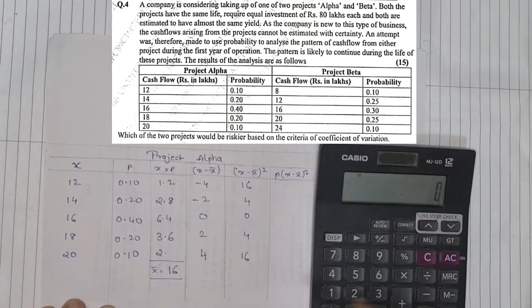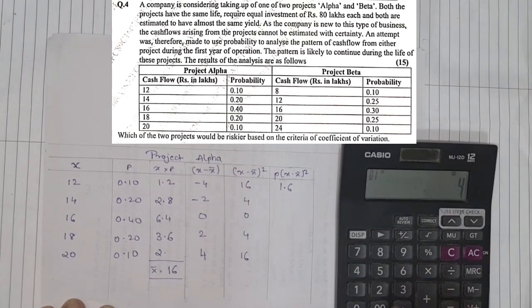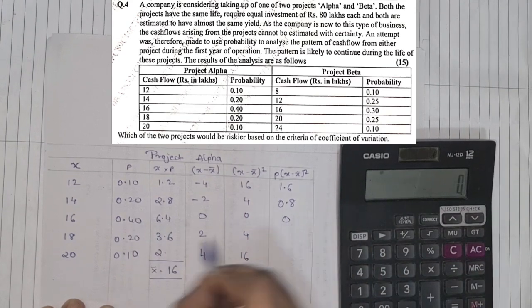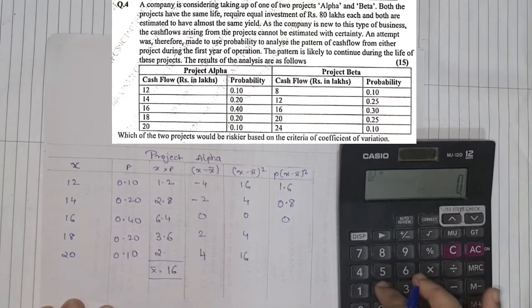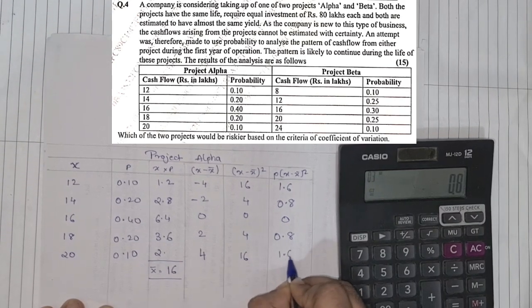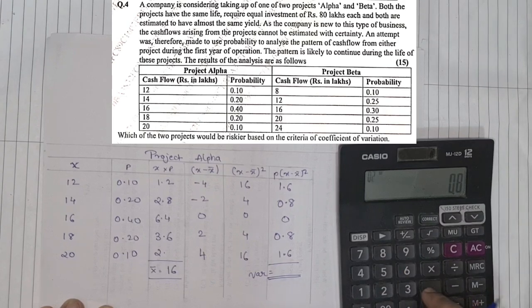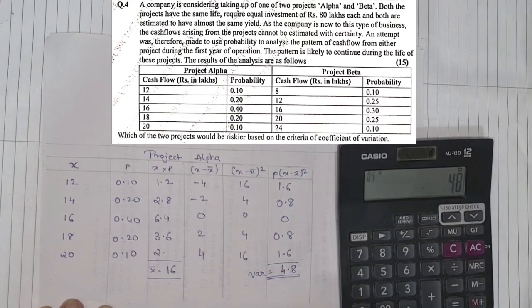So on the calculator, 16 into 0.1, so that will become 1.6. Next is 4 into 0.2, which is 0.8. Next, anything into 0 is 0. Next is again 4 into 0.2, so that will become 0.8, and 16 into 0.1 is 1.6. We add up this whole column, that's basically our variance. So 1.6 plus 0.8 plus 0.8 plus 1.6 is 4.8.